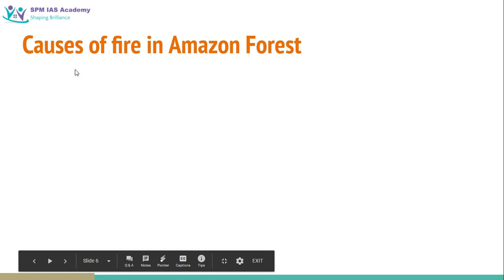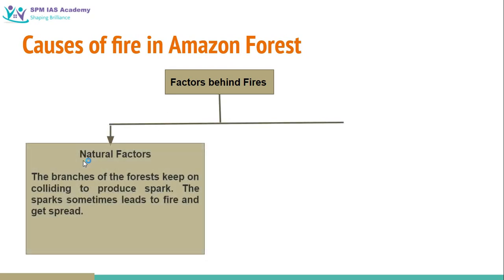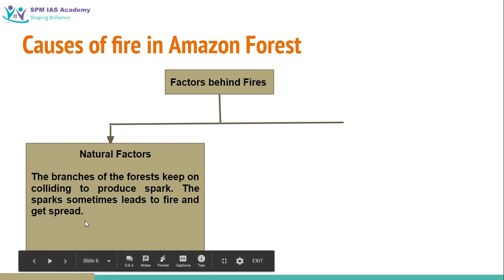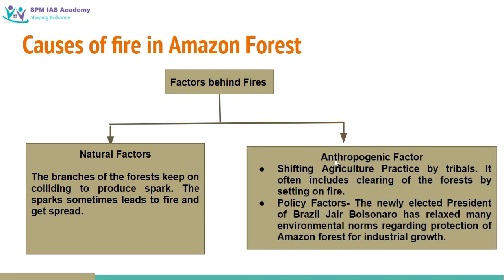Let us see the causes of fire in the Amazon forest. There are some natural factors that cause fire, like branches of the forest colliding to produce sparks, which sometimes lead to fire. But there are also man-made and anthropogenic factors that are leading to more frequent forest fires in the Amazon area. One anthropogenic factor is shifting agriculture practiced by the tribes of this area.